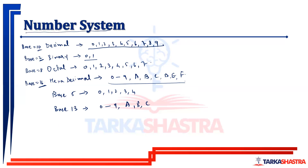For example, a base 5 number system will have 5 digits: 0, 1, 2, 3, 4. A base 13 number system will have 13 digits: 0 to 9, then A, B, C. This is what we understand by a base system. You might get questions like: convert this number which is in octal to hexadecimal, or convert this number which is in base 4 to decimal.